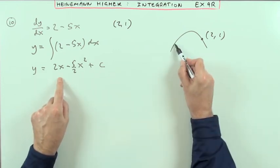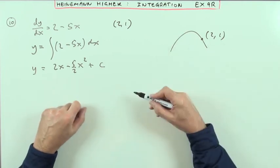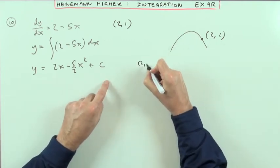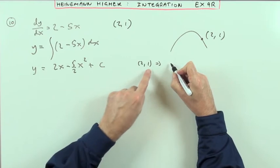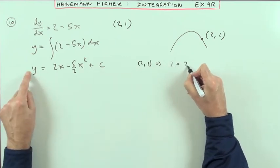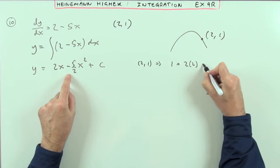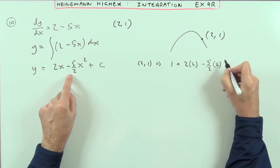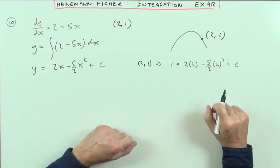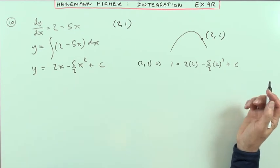Well, since this refers to this graph, any point on it will do, and it's giving me a point on it. So I could say that I've got the point (2, 1), which means if I put 1 for the y-coordinate and 2 for the x-coordinate—so 2 times 2 minus 5 upon 2 times 2 squared—I'll be able to work out C because it's the only thing left that isn't a number.